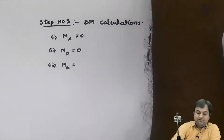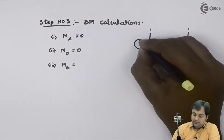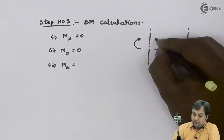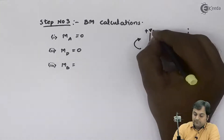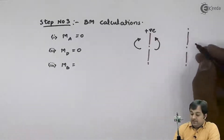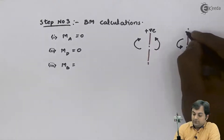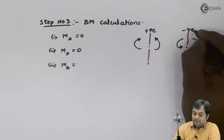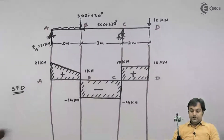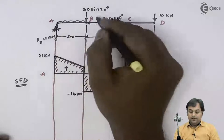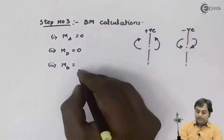The sign convention is: if we have clockwise moment to the left and anti-clockwise moment to the right, they are positive. If we have anti-clockwise moment to the left and clockwise moment to the right, they are negative. Here RA into 2 will be positive because it is to the left.